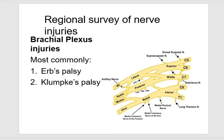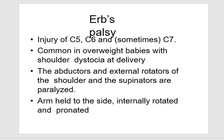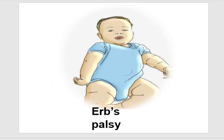In the brachial plexus, the two most common injuries are Erb's palsy and Klumpke's palsy. In Erb's palsy, the injury involves C5 and C6, and sometimes C7; it is common in overweight babies with shoulder dystocia at delivery. The abductors and external rotators of the shoulder and the supinators are paralyzed. The arm is held to the side, internally rotated and pronated — this is the 'waiter's tip' posture.